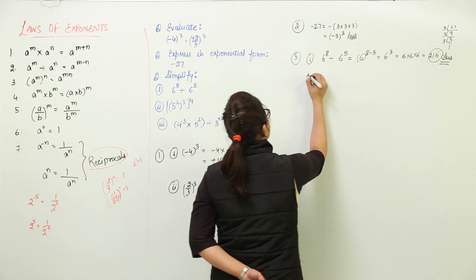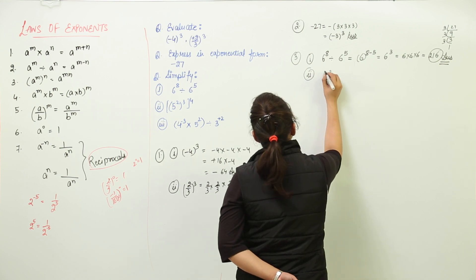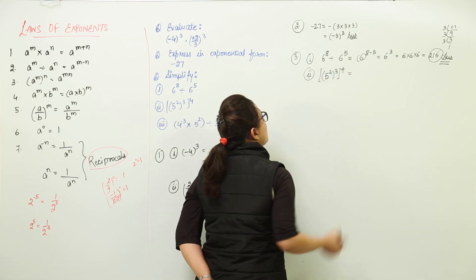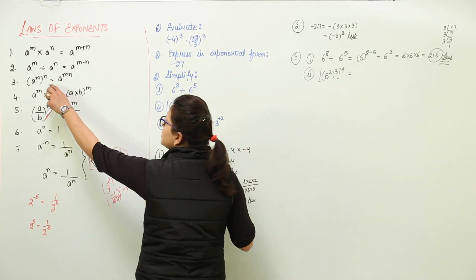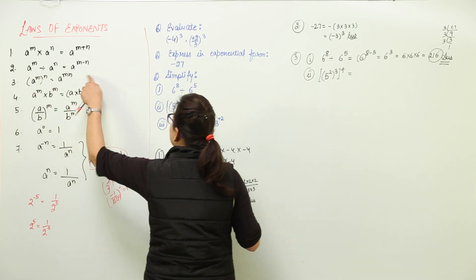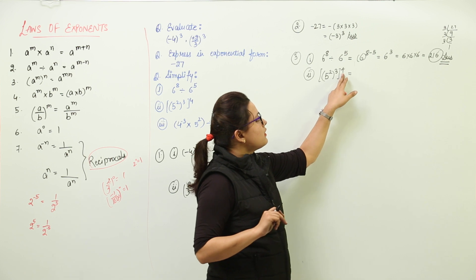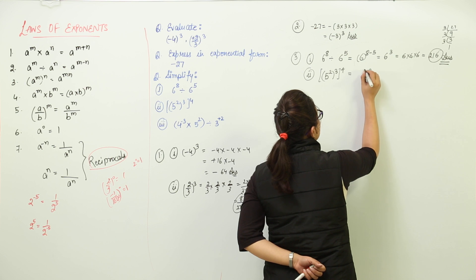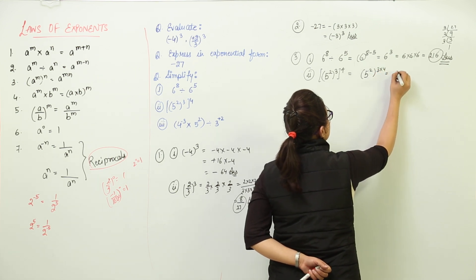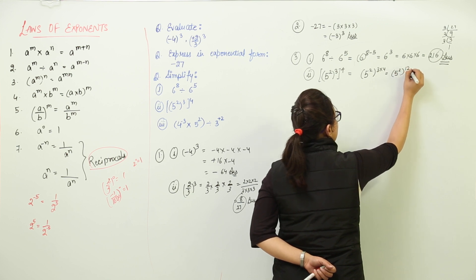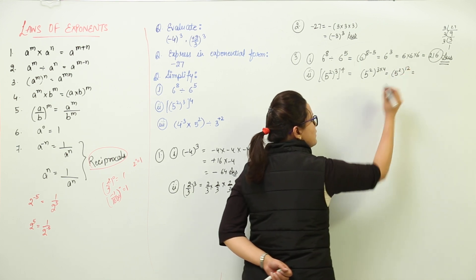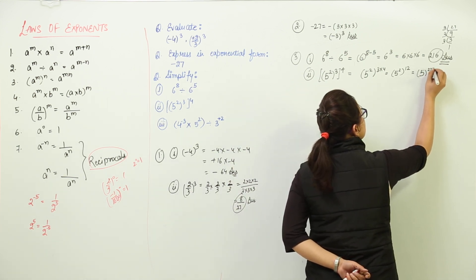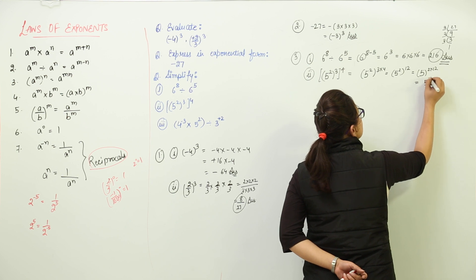The second part asks us to simplify 5 raised to power 2, whole raised to power 3, and whole raised to power 4. As discussed in the third law, the powers in this case get multiplied. So first we multiply power 4 with power 3 to get 5 raised to power 2, raised to power 12. Then applying the law again, we get 5 raised to power 2 into 12, which gives 5 raised to power 24.